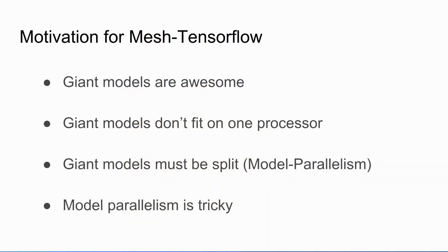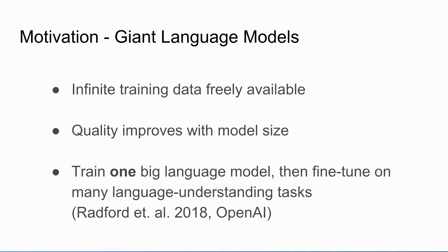So why do we care about this? I care because I want to build giant models. Giant neural networks are awesome — they're better quality — and unfortunately they don't fit on one processor, so you can't just use data parallelism and put the whole thing on every processor. Model parallelism is very tricky to implement well, especially when you have a giant network. My favorite domain is language modeling.